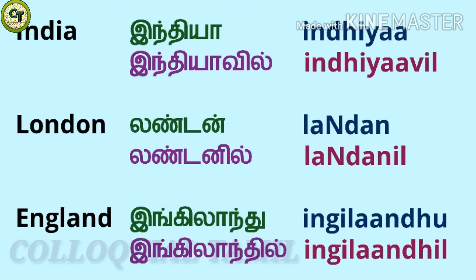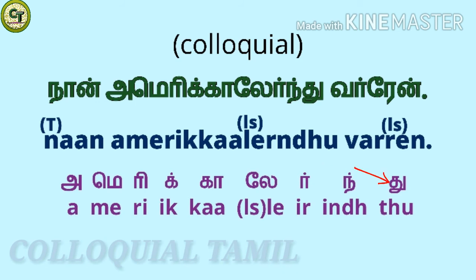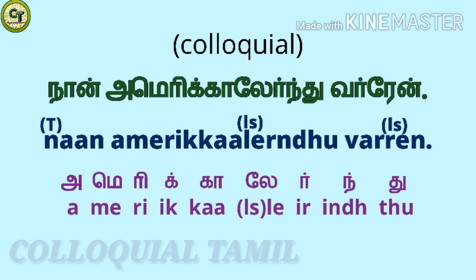But don't worry, there's a solution. The ending changes only in the formal form, so you can simply answer with just the place name instead of the full sentence, like just saying 'London'. In the colloquial form, the ending is the same for all places. The colloquial form is: 'nán America lerindhu verri gireen'. No matter what the place name is, 'lerindhu' is added at the end. For example: India lerindhu, London lerindhu, England lerindhu, Kerala lerindhu, etc.